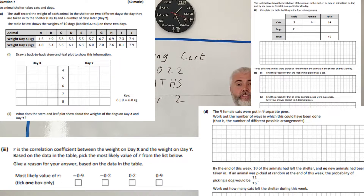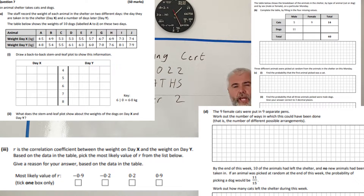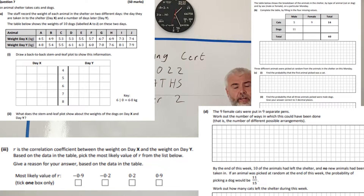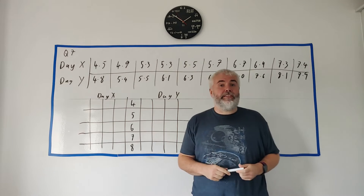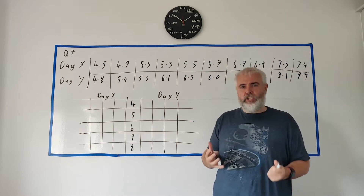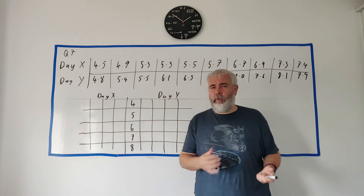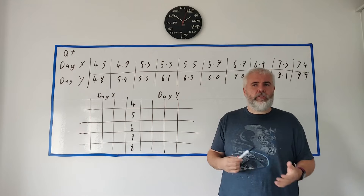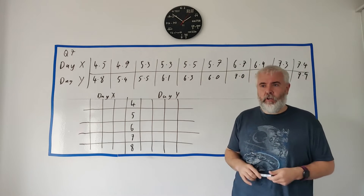In this video we're going to be looking at a question from the Math Sleeve Insert Paper 2 from 2022. You'll find some timestamps below the video if you want to skip to a specific question, and if you want to go to a different question, check out the playlist linked in the description. This is question seven — it's about interpreting data, putting data on a chart, finding some probabilities, doing some counting, and always a bit of problem solving.